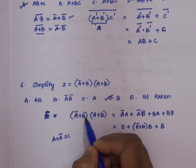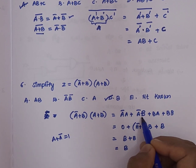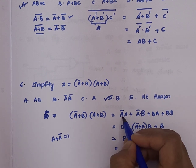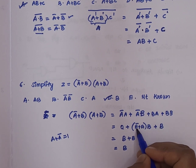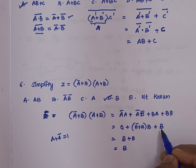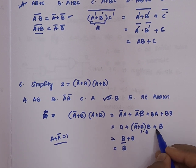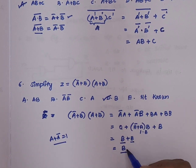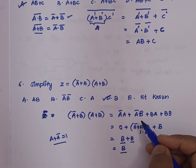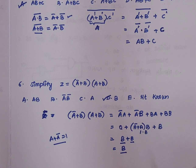To recap the Boolean simplification: expanding (ā + b)(a + b) gives ā·a + ā·b + b·a + b·b. Since ā·a = 0, and taking b common from ā·b + b·a gives b·(ā + a), and ā + a = 1, so this becomes b. Adding b·b = b, the total is b + b = b. So option D is the correct answer.